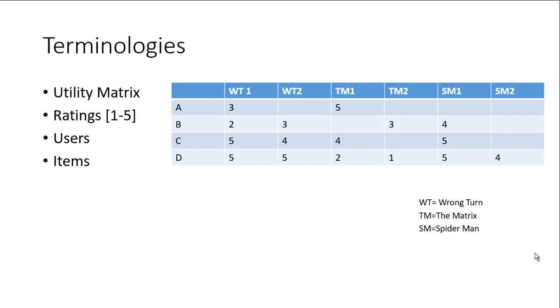So let's see which terminologies we will use frequently in this topic. First of all, utility matrix. This matrix which looks like a table contains some numerical values. This whole table is termed as utility matrix. These numerical values are termed as ratings ranging from 1 to 5. As you can see, no value is less than 1 or greater than 5.